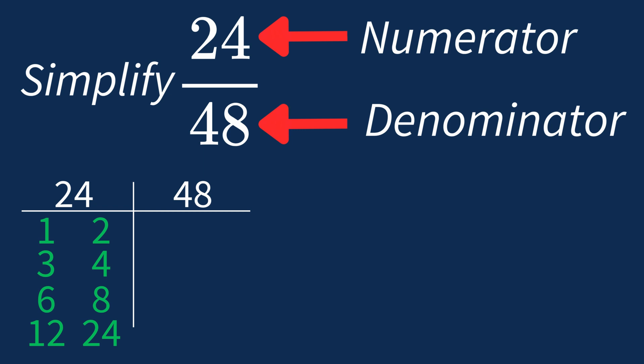For 48, the factors are 1, 2, 3, 4, 6, 8, 12, 16, 24, and 48.